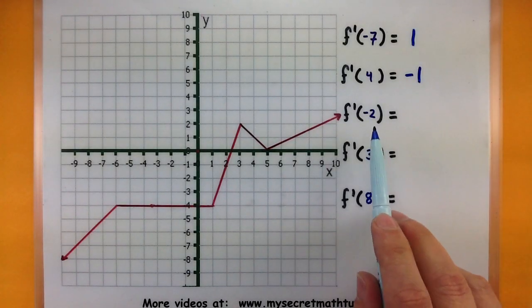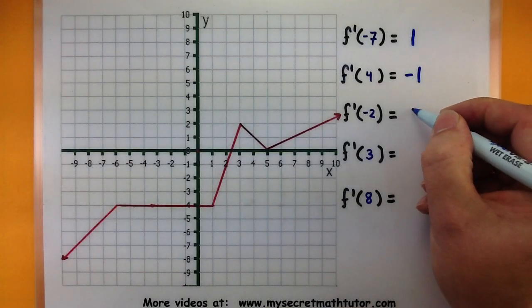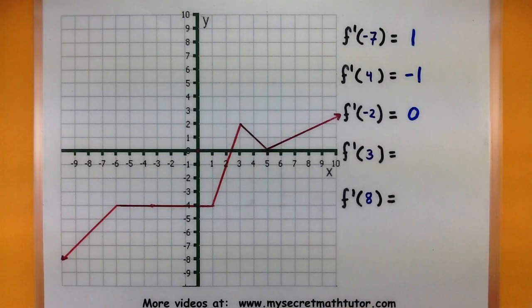All right let's see. What is the derivative at negative 2? Notice at this spot we're not really going up we're not really going down. This line is completely horizontal and if it's horizontal its slope is 0. So my tangent line will also be 0 at that point.